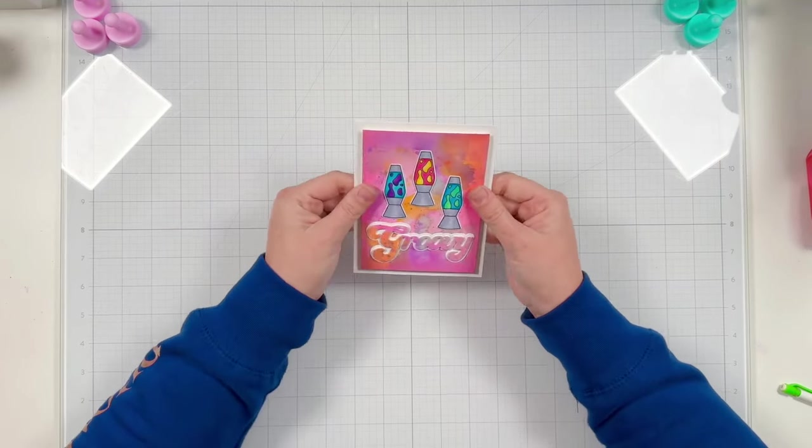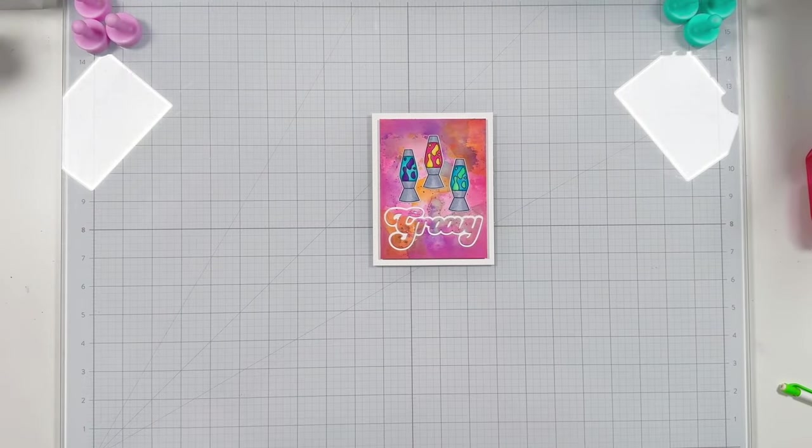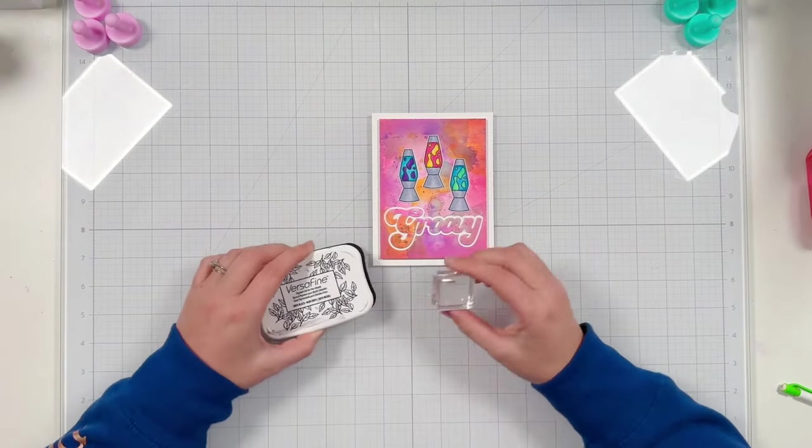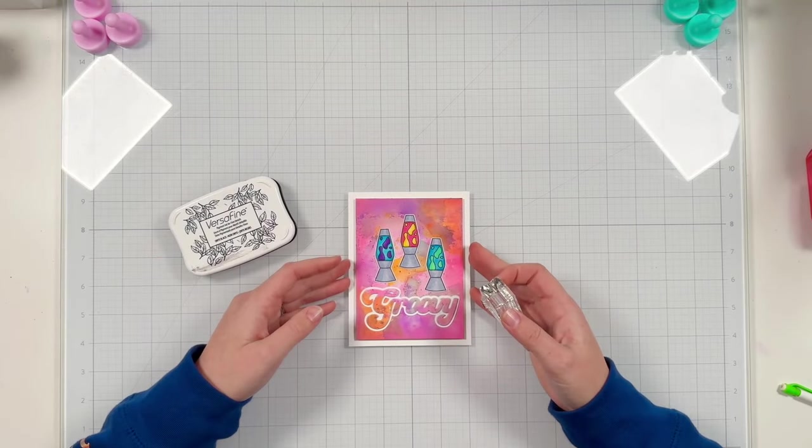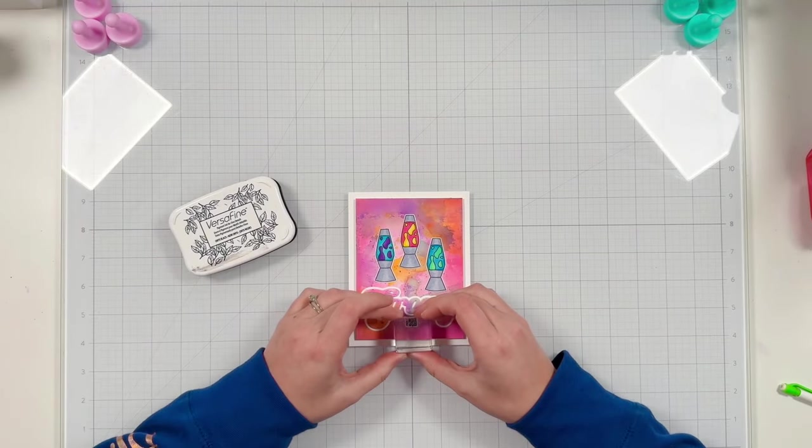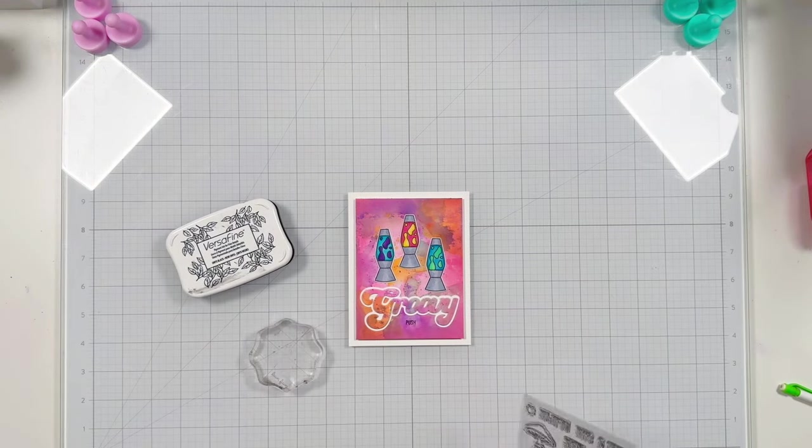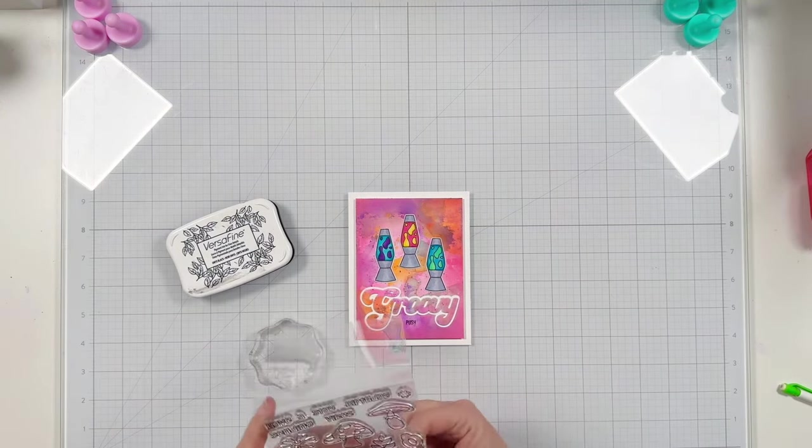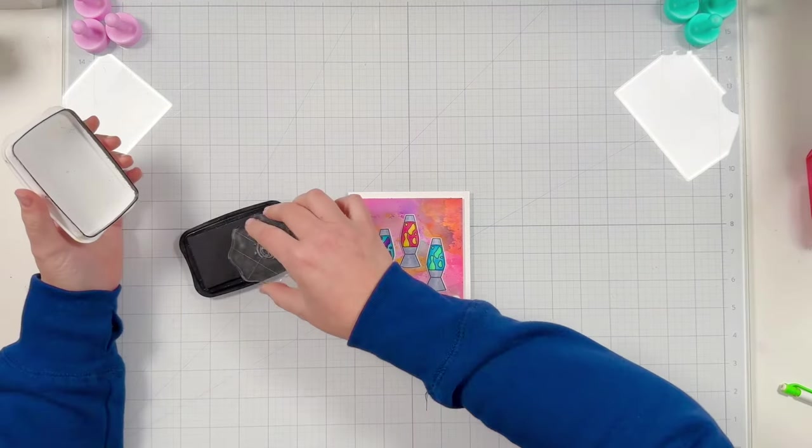Once I have everything in place I'm going to play around with my lights even more and this is when I realized I completely forgot to stamp the word push on my panel before gluing everything down. I got really excited but that's okay. I'm going to grab push from the Pear Blossom Press stamp and die bundle and use my Versafine ink and luckily it worked out perfectly. I was able to stamp my push sentiment with no issues.